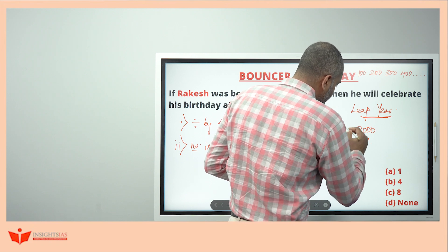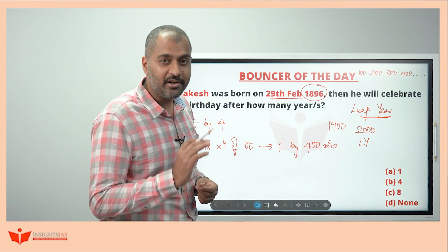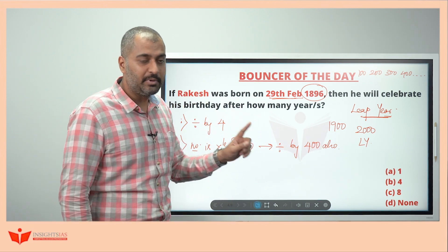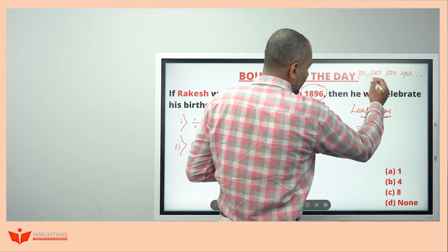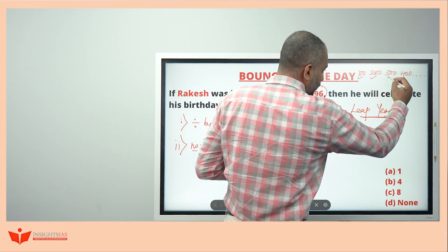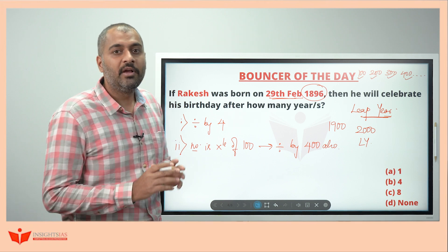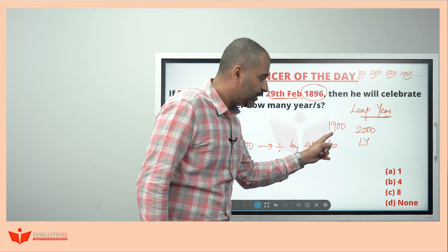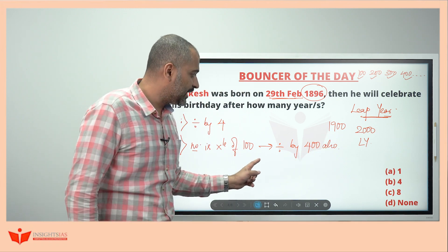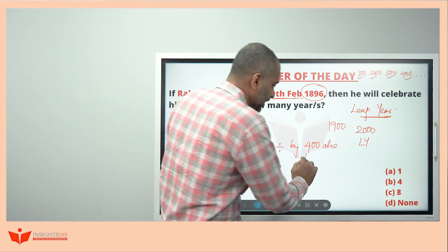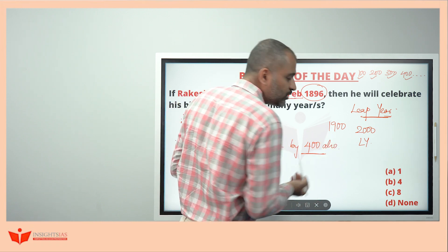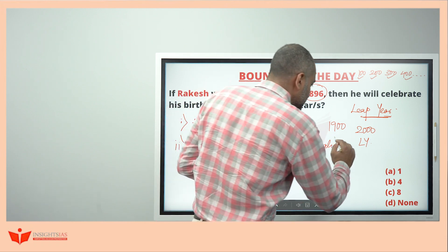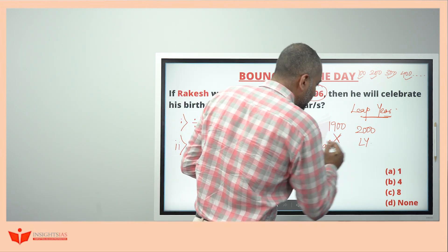What about 1900 — is it a leap year? 1900 is divisible by 4. But since it is a multiple of 100, you have to check divisibility by 400. 1900 is not divisible by 400, so this is not a leap year — it is a normal year with only 365 days.